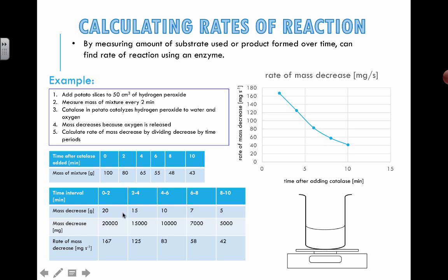So 20,000 divided by 120 gives me this number: 167. I've done the same thing, just one more repeat calculation check. I did 15,000 divided by 120 seconds in two minutes, so 15,000 divided by 120 gives me this number.